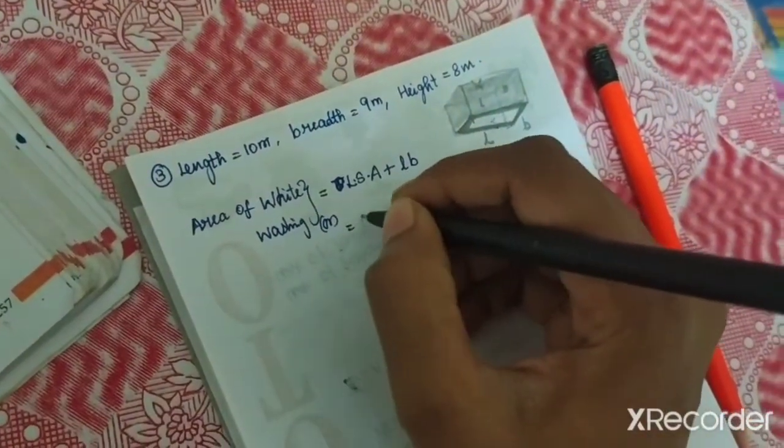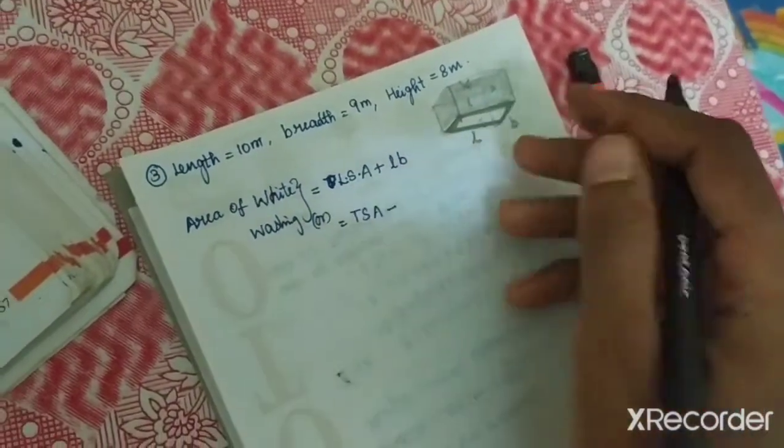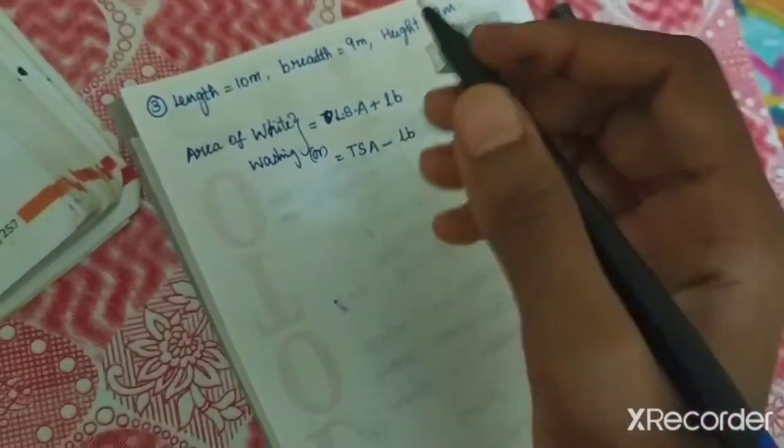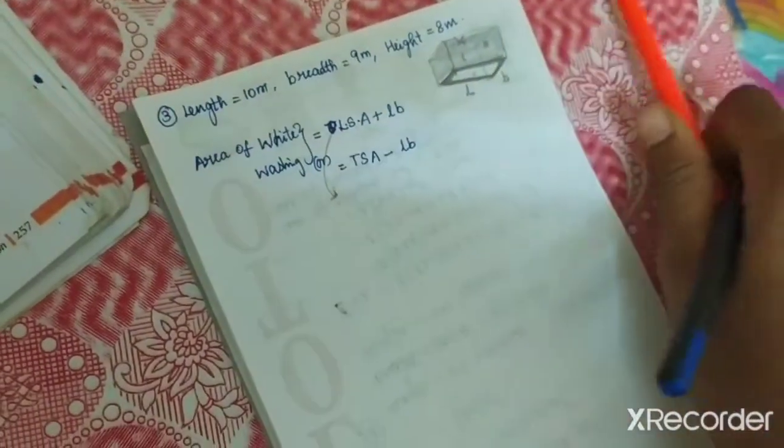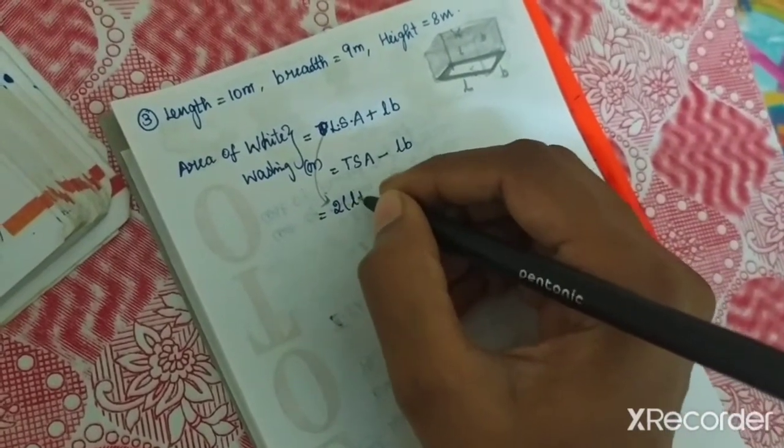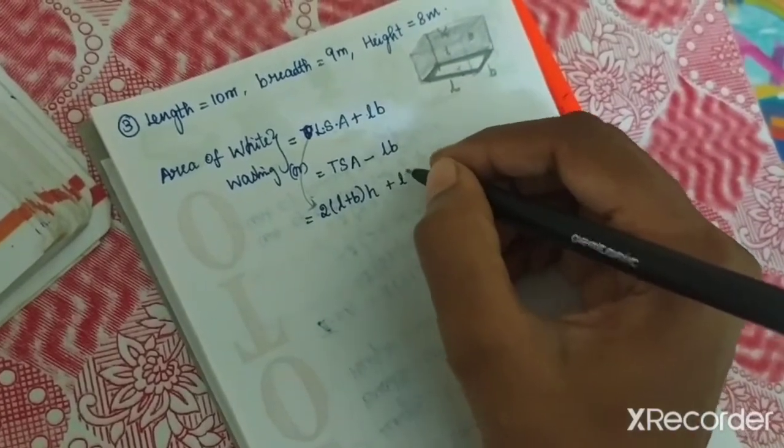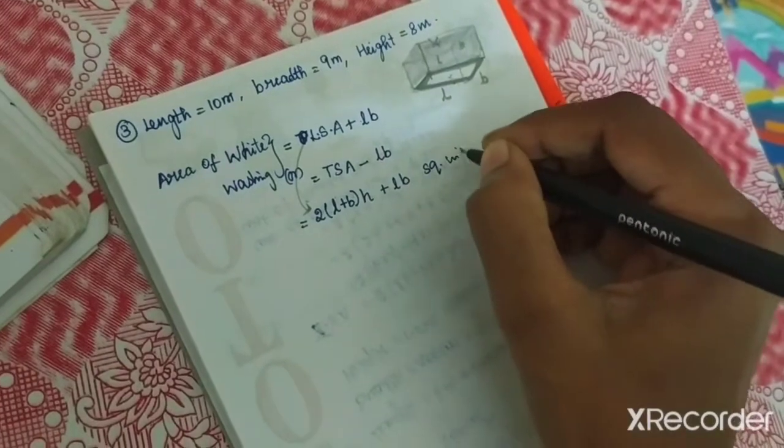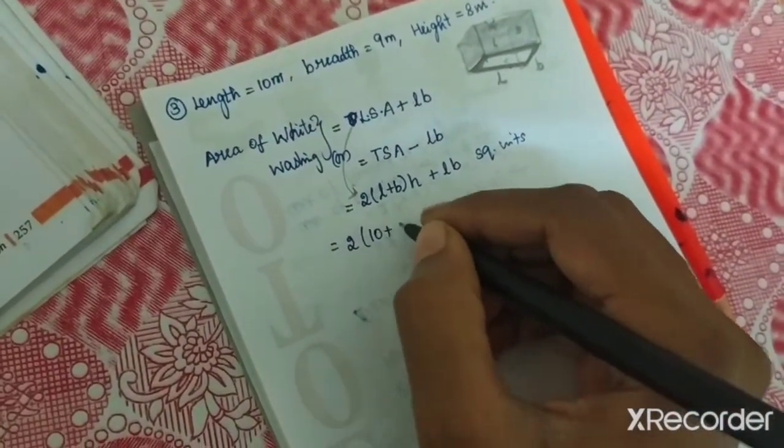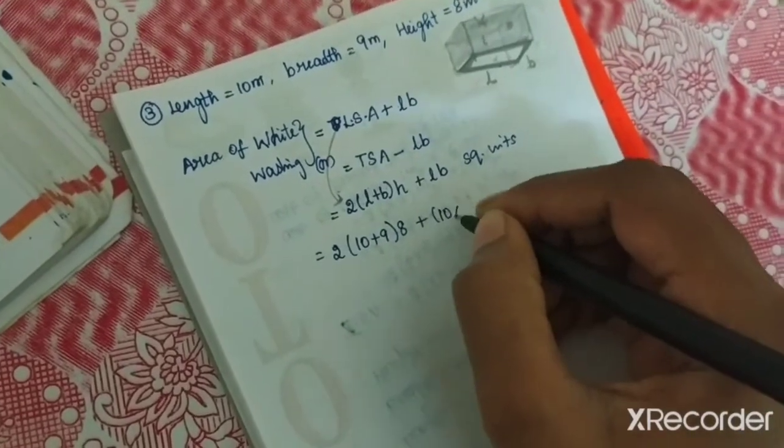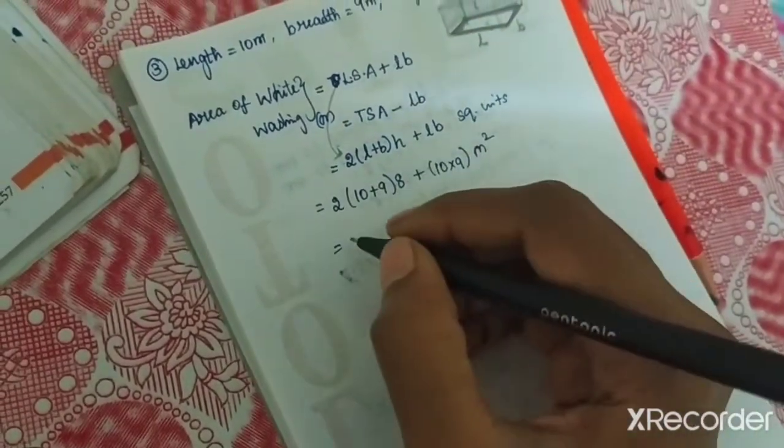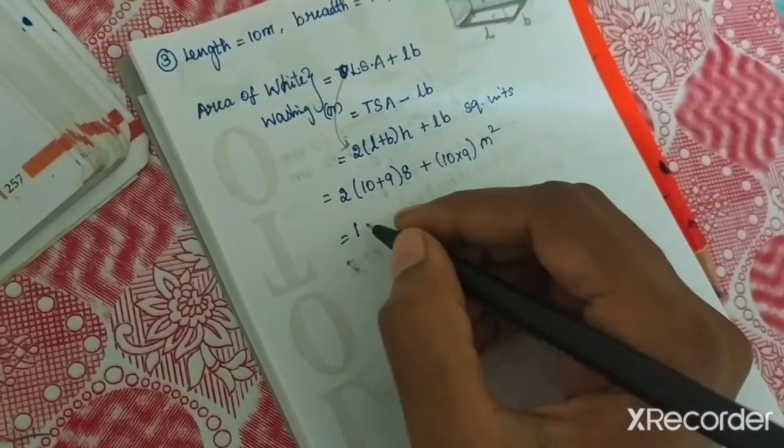So TSA is 1160 centimeter square. Then LSA: 2 L plus B into H, square units. Substitute in this place: 20 plus 15 into 8 centimeter square. 2 into addition of this, 35, 35 into 8 centimeter square. 40, so 4, 8, 3s are 24, 7, 28 into 2, 016, 5 so 560 centimeter square.